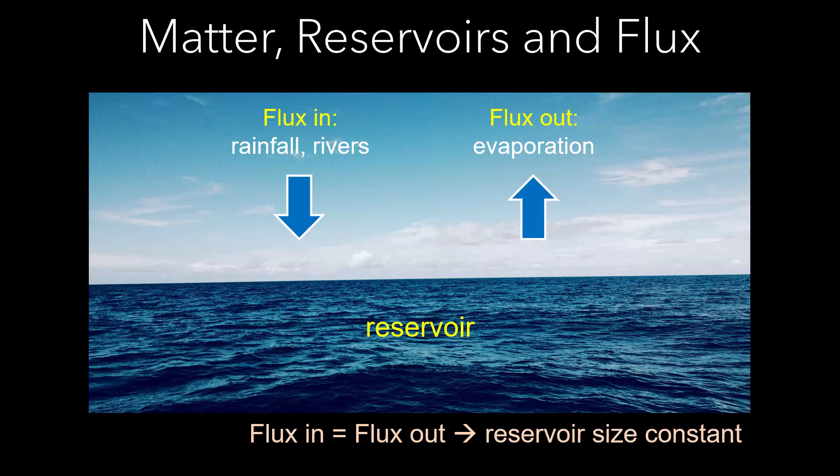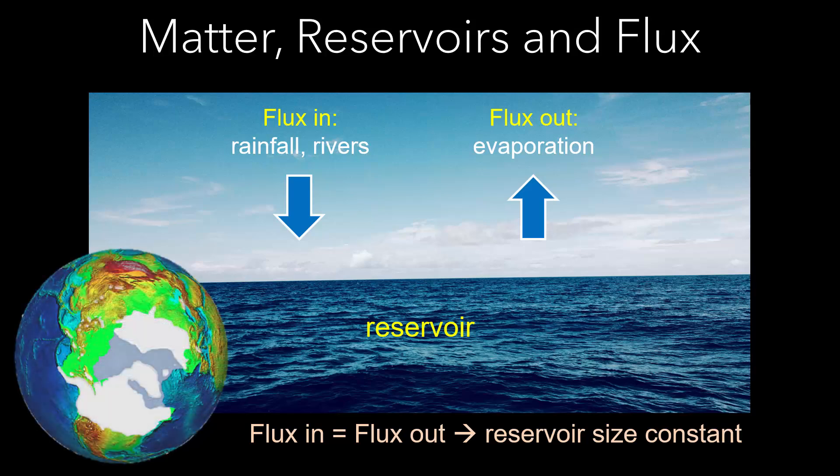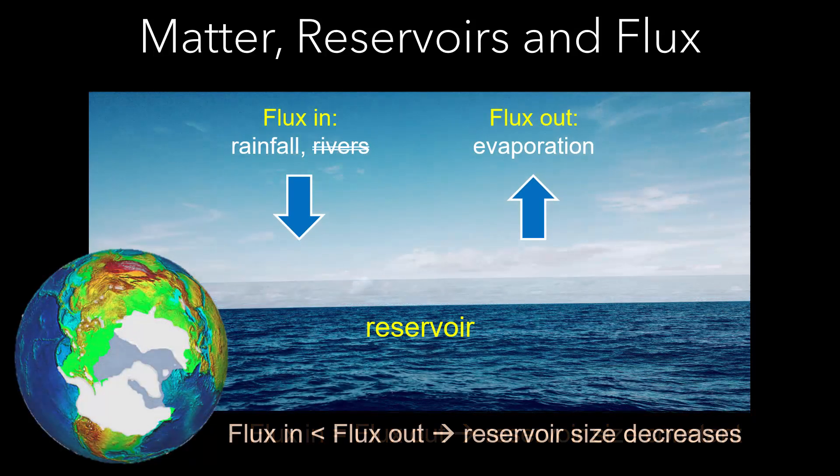However, during the last ice age, frozen precipitation that fell on the continents was trapped in ice sheets and didn't return to the ocean. Consequently, sea level dropped significantly by more than 100 meters.